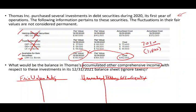Year one is easy because you don't have any prior balance. If I have a loss, I need a fair value adjustment with a credit balance of $1,600. Starting from zero, I credit fair value adjustment $1,600 and debit unrealized holding gain or loss — now it's a loss of $1,600. That's the 2020 balance.